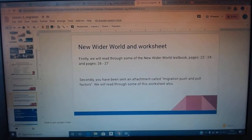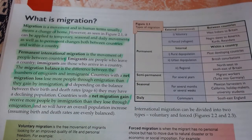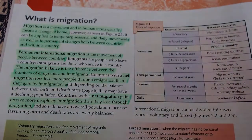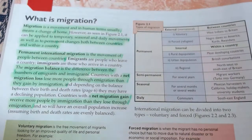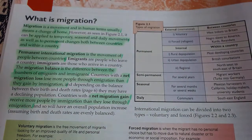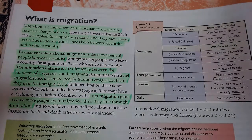First things first — New Wider World, page 22. We'll go through some stuff in green again. Migration is the overall topic. Maybe next lesson, or at the end of this topic, I'll try and make some type of flow diagram. I was going to do it today but we won't have covered all the vocabulary yet.